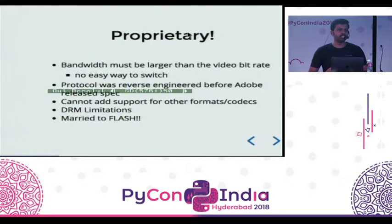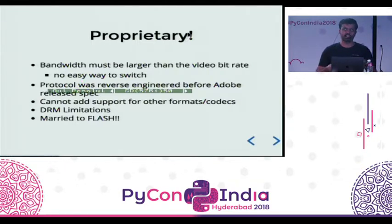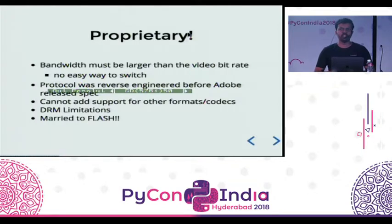Why did it need to change? It is a proprietary format. Before Adobe released its spec in 2012, other people had to reverse engineer the protocol to understand it, and Adobe sued them. Also, there was still no standardized way of having multi-bitrate streams. If my network cannot play at the broadcast rate in a livestream, I am still at a loss. Since it is proprietary, it is always stuck to Flash, which supports only MP3, AAC, H.264, and FLV video — so newer innovations like H.265 cannot be used.